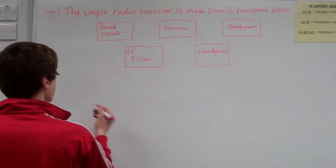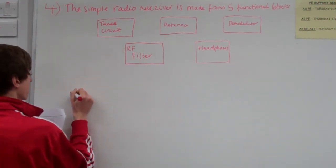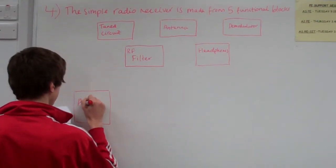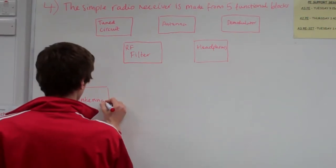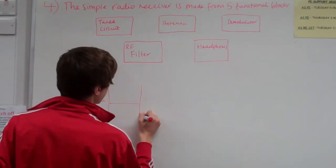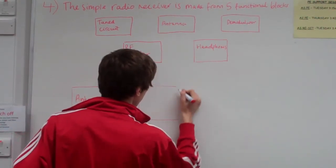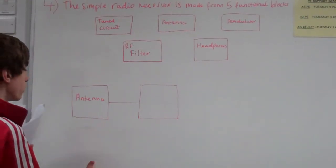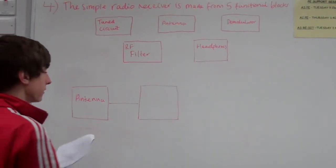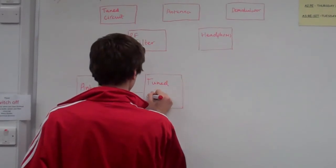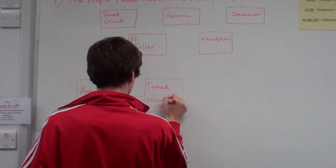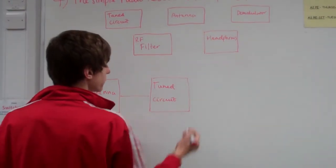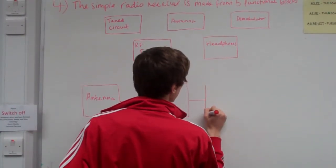So we start off just by drawing it out in a lined diagram. You start off with the antenna. The next one is the tuned circuit, because the tuned circuit will actually receive the specific signals that you want, rather than just taking any pulses that the antenna will give you. You then have to ask yourself what's going to come next. In this case, the demodulator comes next because that's what separates the audio signal from its carrier.